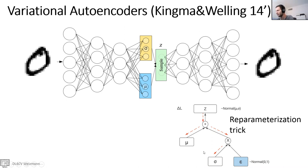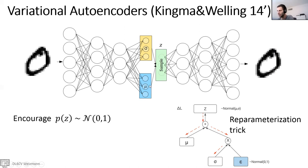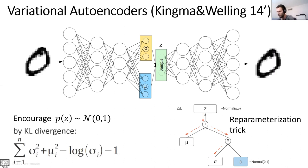But there's another problem: we want Z to follow a standard Gaussian distribution with mean zero and variance one, but the encoder can output whatever mu and sigma it wants. To address this, we encourage the probability of Z to be as close as possible to the standard normal distribution. This is done via KL divergence, where we try to make mu as close as possible to zero and sigma as close as possible to one.